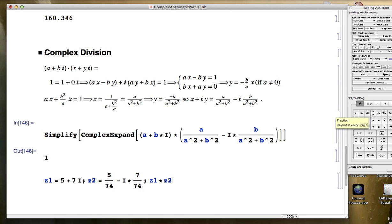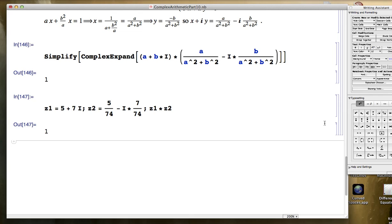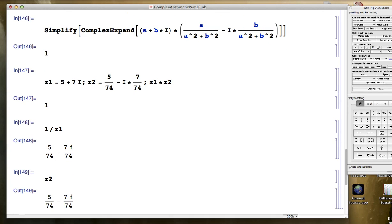Let's see if it simplifies it here. Yes, it does simplify it right away there without using simplify or complex expand. Those two numbers are multiplicative inverses of each other. Another way to check that would be to do 1 over z1. And notice that you get the same thing as z2. That is the same as z2.